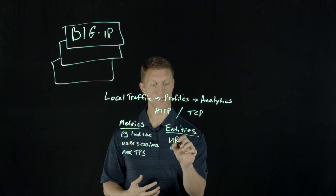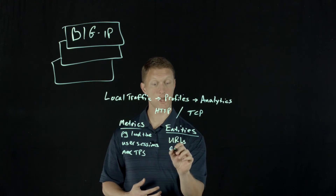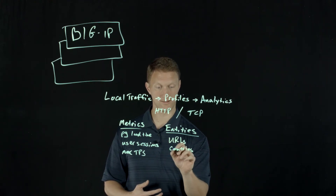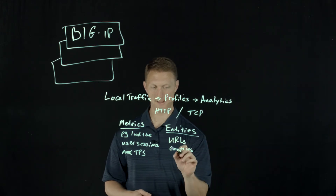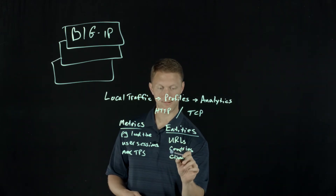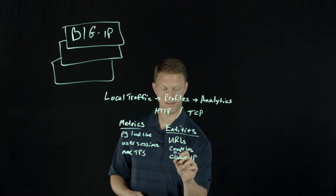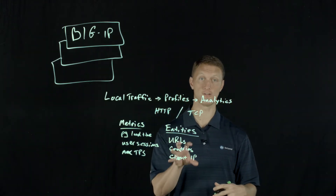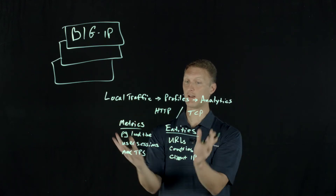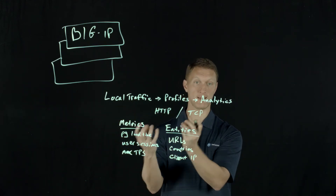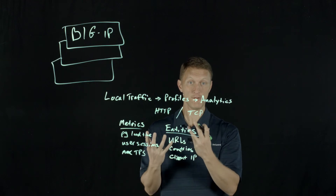Entities, on the other hand, are things like URLs, countries — did you know you could track countries? — client IP addresses, and more. There's a whole bunch of entities you can look at as well. So when you look at all these things, there's a lot of statistics you can gather data for via these analytics profiles.